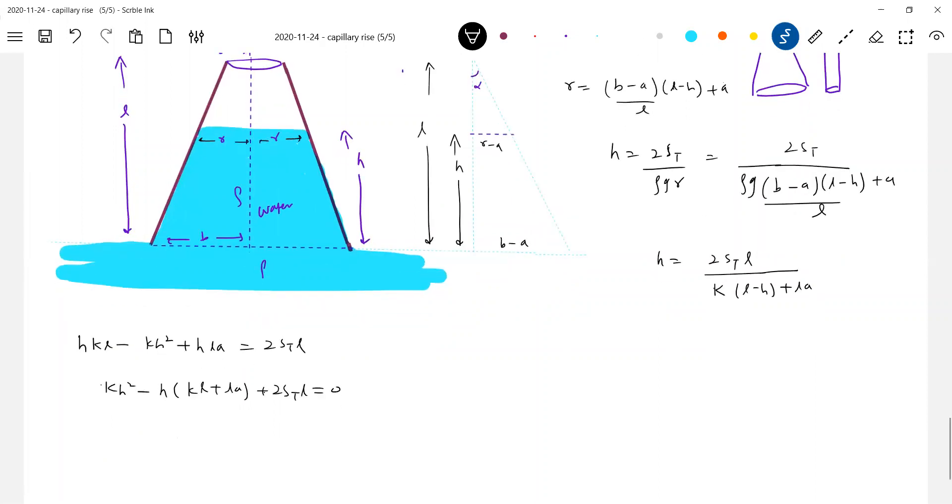Or say K H square minus H into K L plus L A plus 2 S T L equal to 0. Quadratic equation solving for this, we'll get expression for H. This will be L, this will be L K plus A plus or minus K L plus A all square minus 4 K, 8 K S T L, all divided by 2 K. What is K? K is what? K is equal to rho g B minus A. Okay, there's a value of this one.